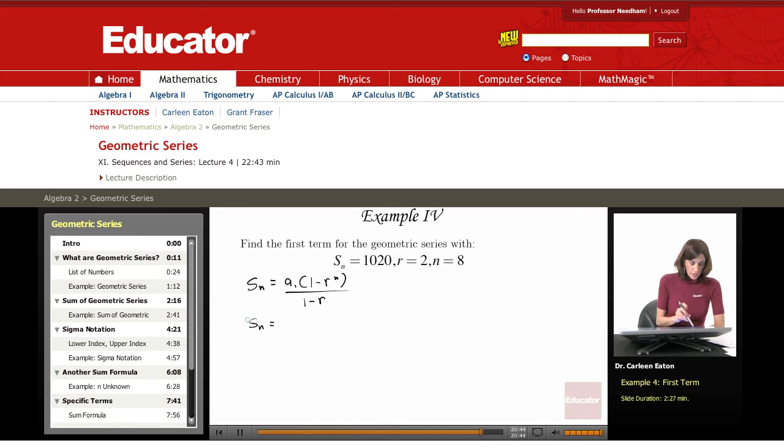And what I'm looking for is the first term. Therefore, the sum is 1020 equals the first term times 1 minus r is 2, and it's 2 raised to the 8th power divided by 1 minus 2.